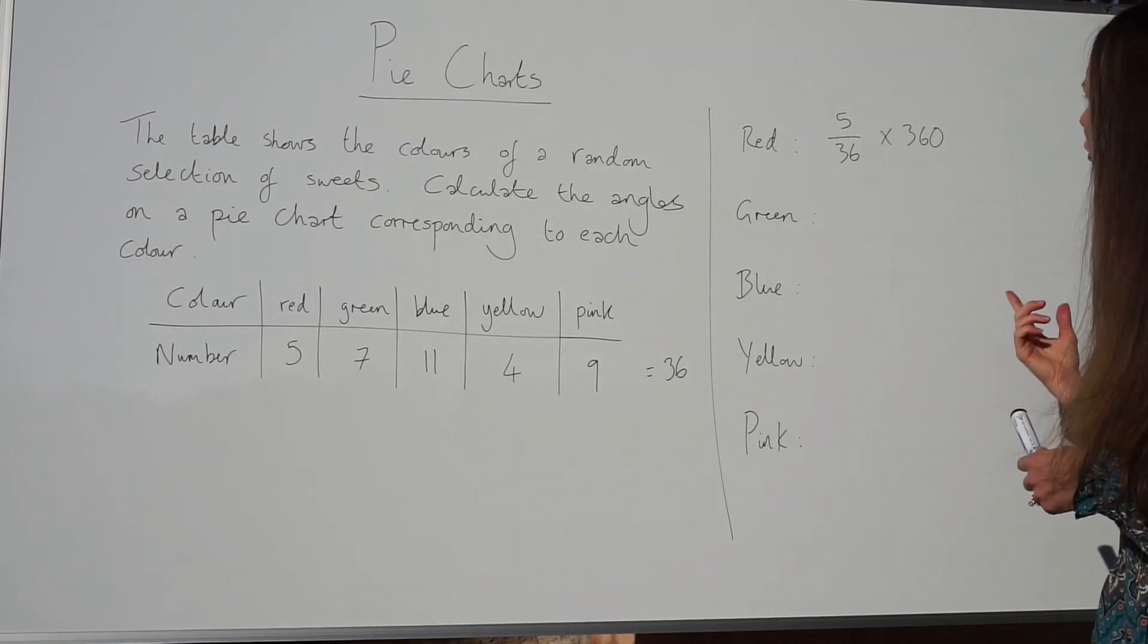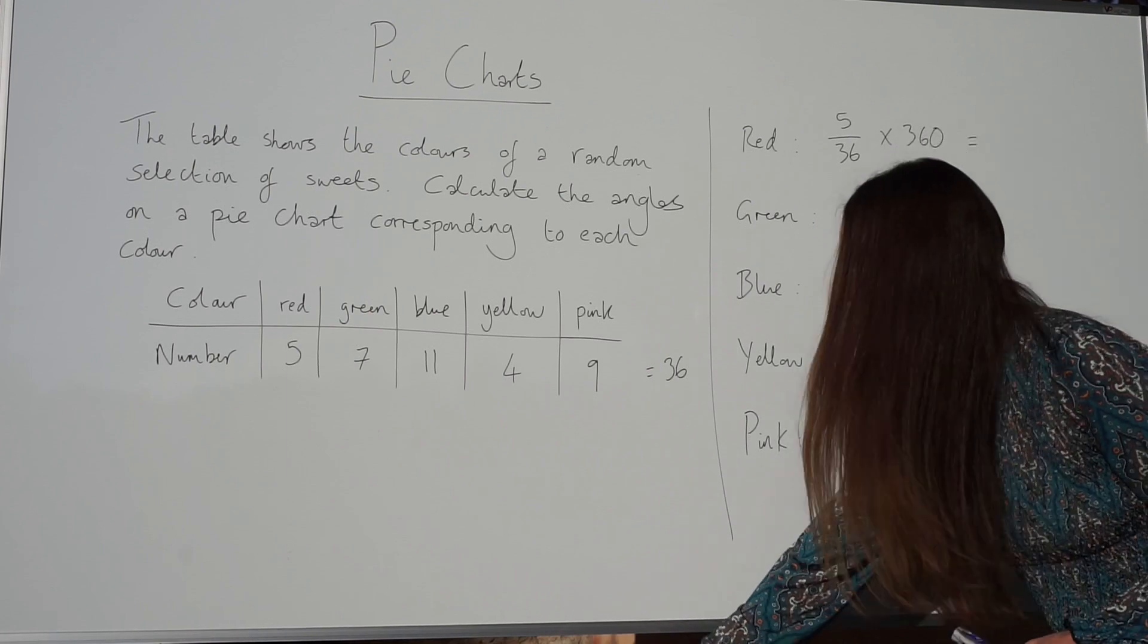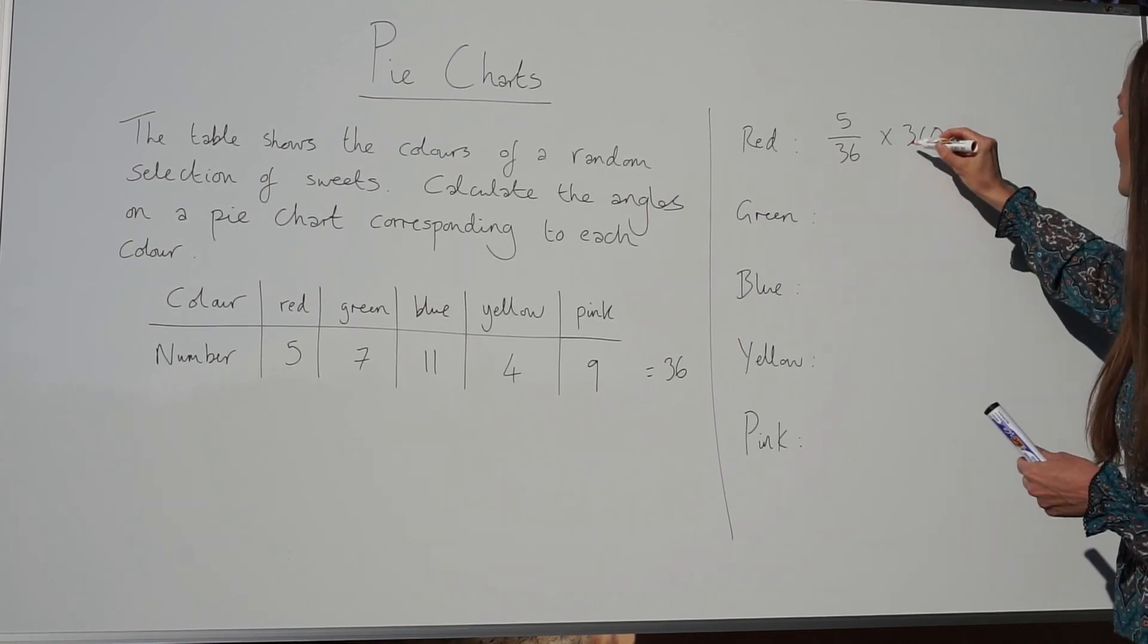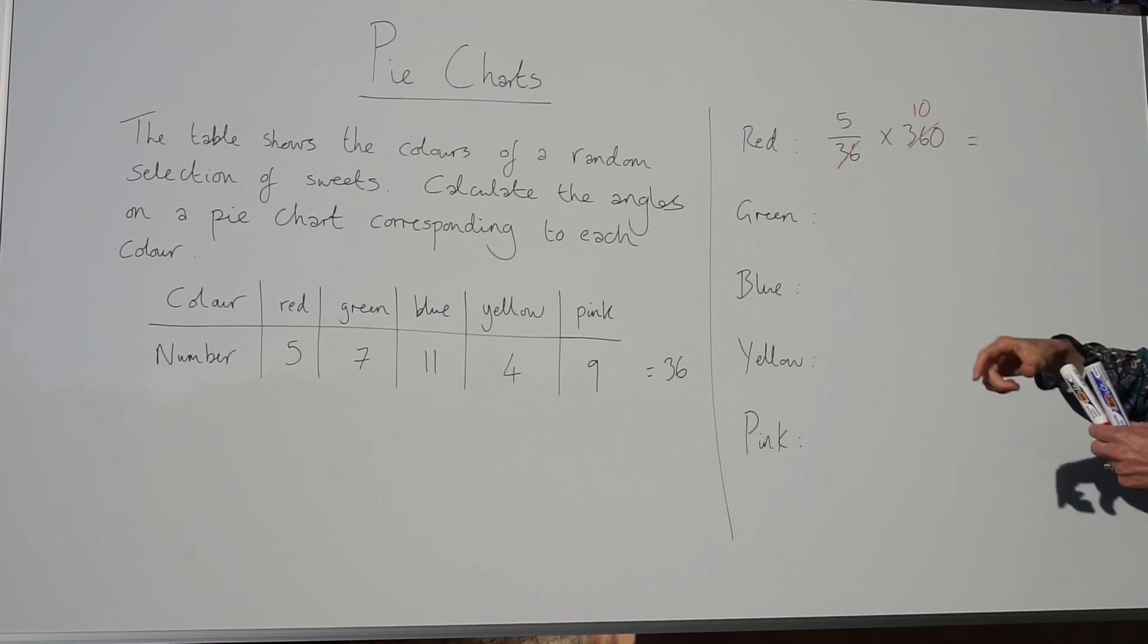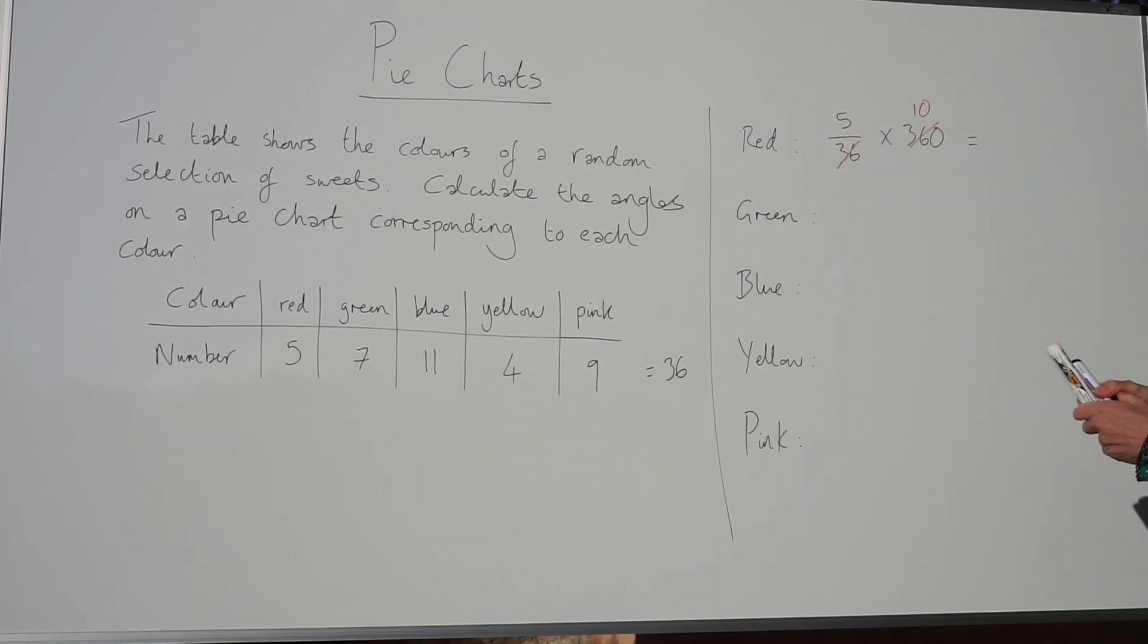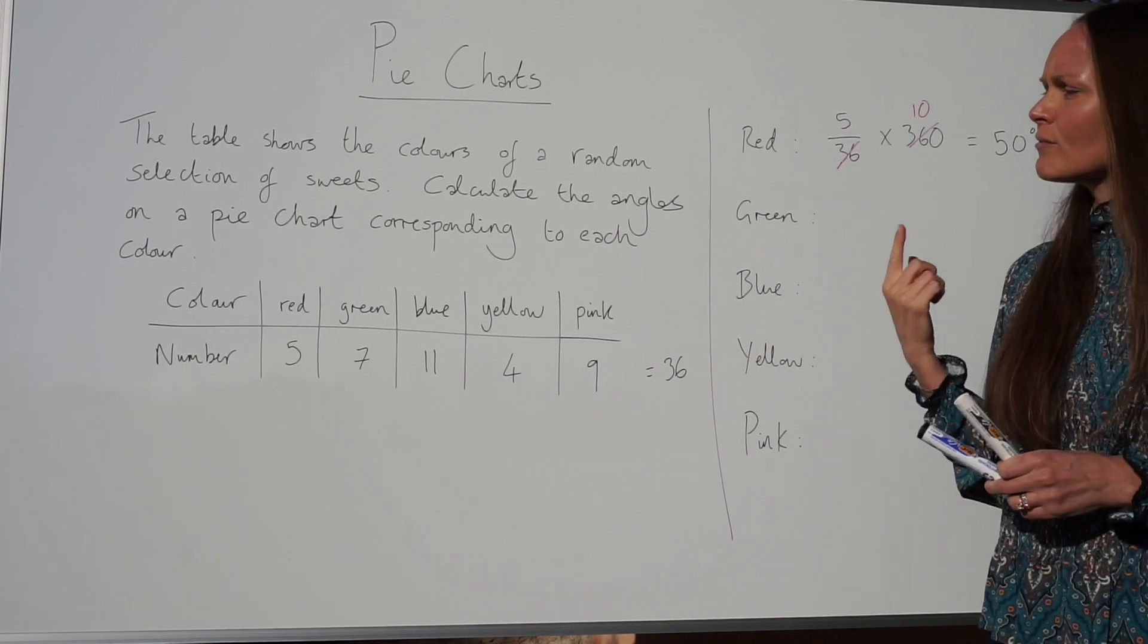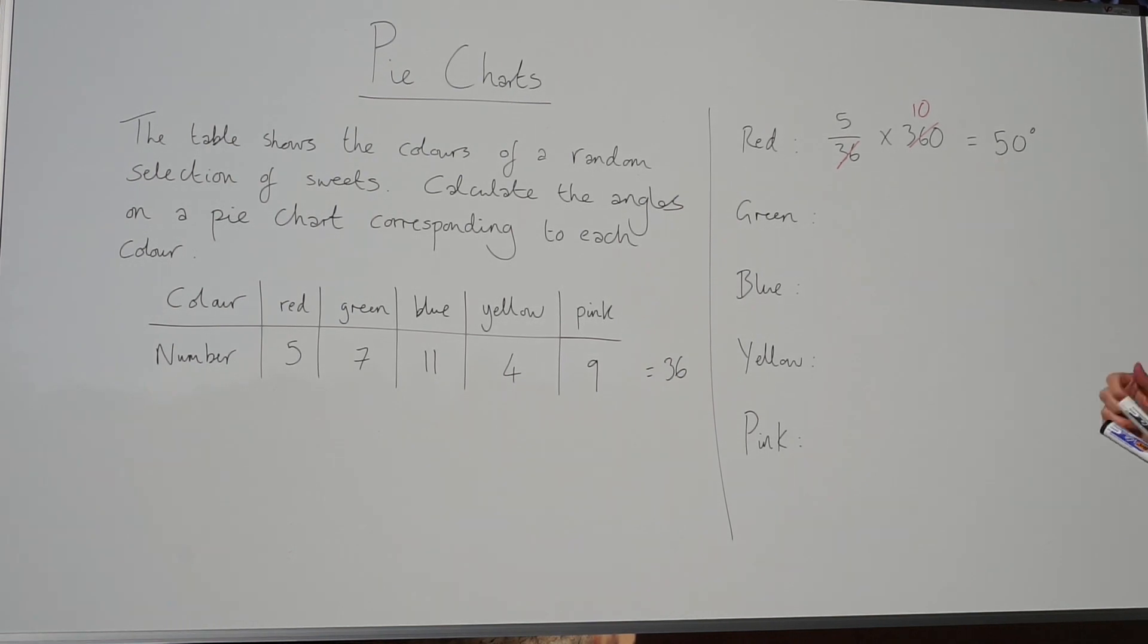You can either put that in the calculator, or if you want to try and do this in your head, it's not too difficult. Can you see that 360 divided by 36 is equal to 10? So I'm going to rewrite that as 10. Then all that's left to do is multiply 5 by 10, which gives us 50. So when you draw your pie chart for the sector showing red sweets, the angle must be 50 degrees.